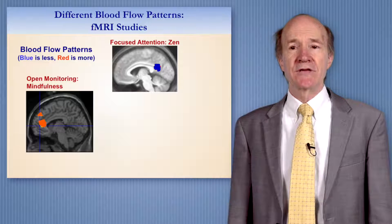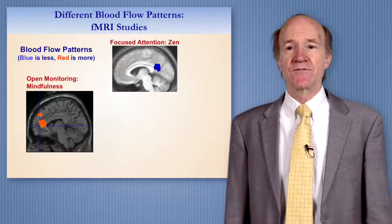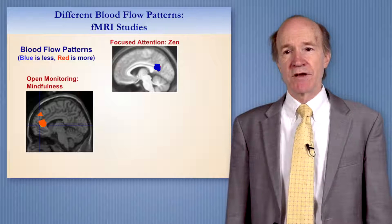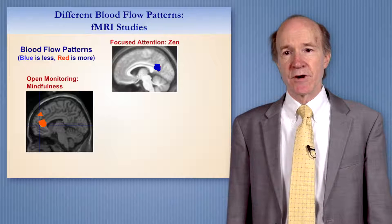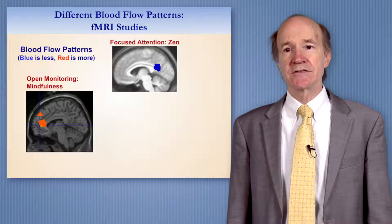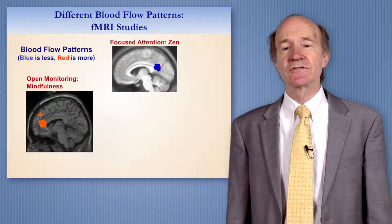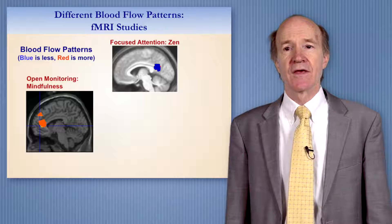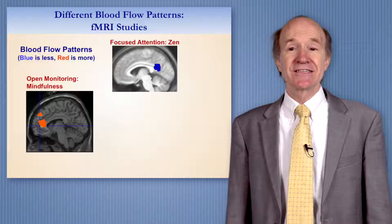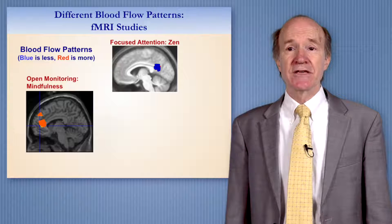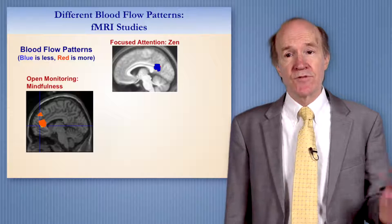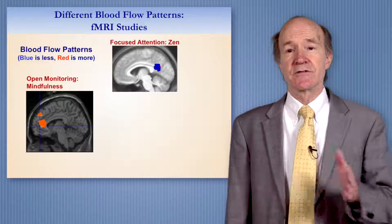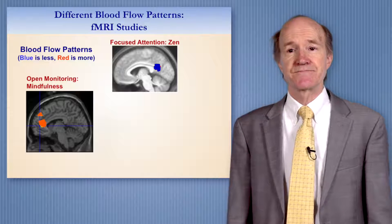In open monitoring meditation — mindfulness — we see increased blood flow in the front part of the brain, which controls attention switching. This is expected because in mindfulness you're moving attention from one experience to another experience to another experience.